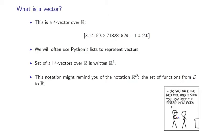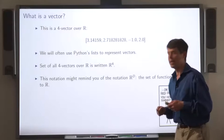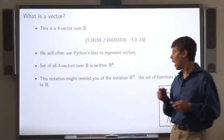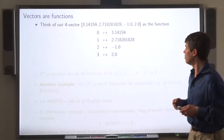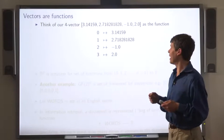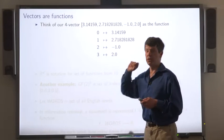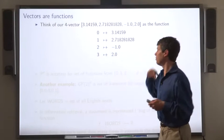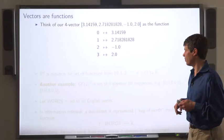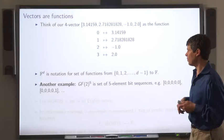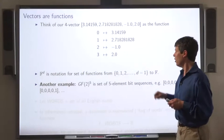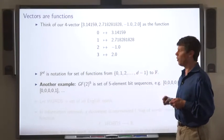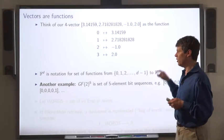And the set of all four vectors over the real numbers is written R4. This notation might remind you of the notation R to the D, the set of functions from D to R. And in fact, I want us to think about vectors as functions. So, R4 vector you might think of as a function from 0, 1, 2, 3 to the real numbers.